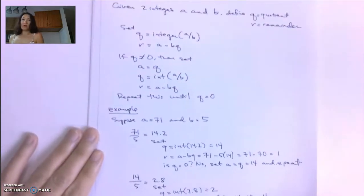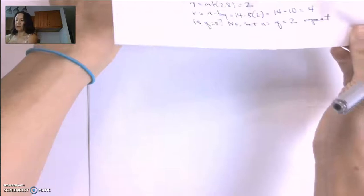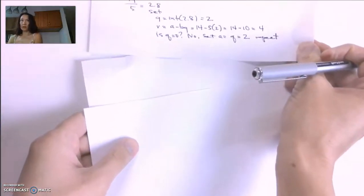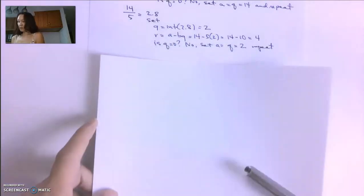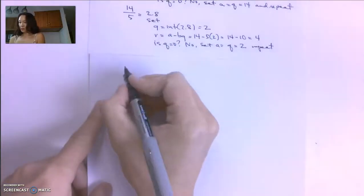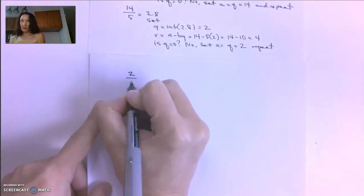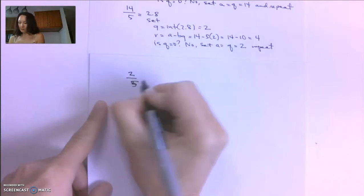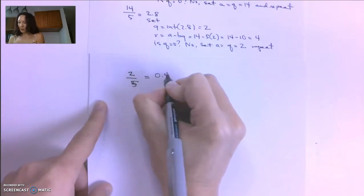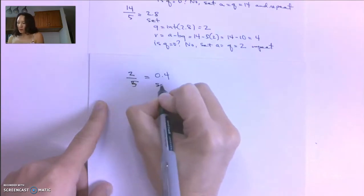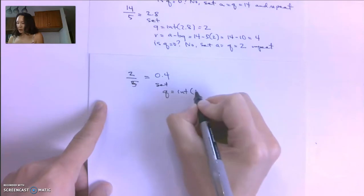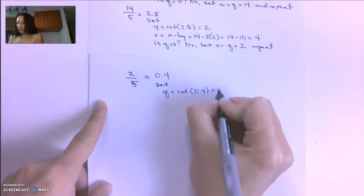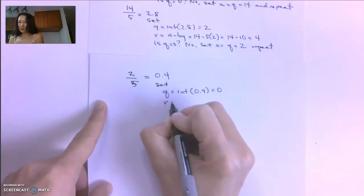So now our A is 2. We're going to repeat this with 2 divided by 5. That result is 0.4. So we'll set Q equal to the integer part of 0.4, which is just 0. We're going to set R equal to A minus BQ, which is 2 minus 5 times 0.